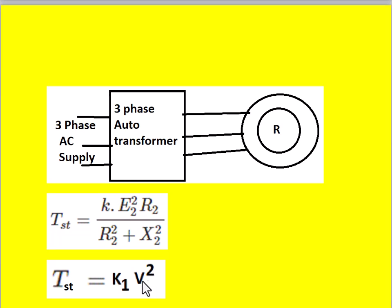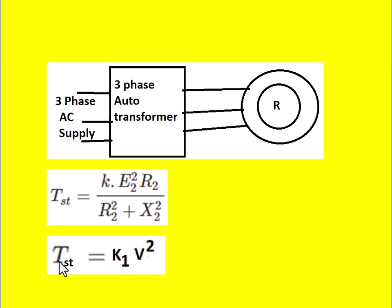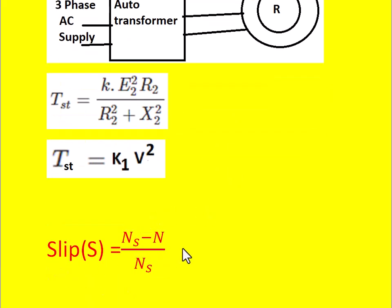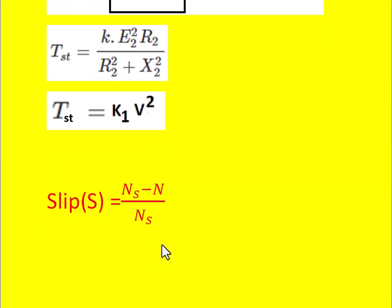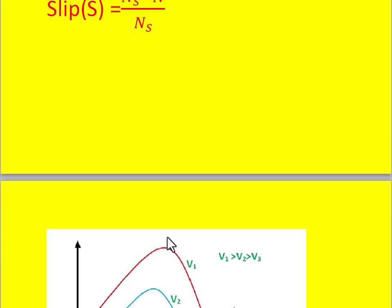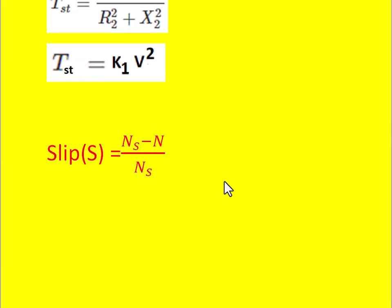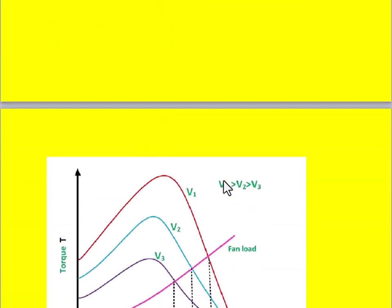Since the constant terms can be replaced with K1 and E2 is replaced with V — the applied voltage per phase to the stator — the starting torque becomes directly proportional to the square of the applied voltage. Slip is defined as: slip = (synchronous speed − rotor speed) / synchronous speed. So torque is directly proportional to V².